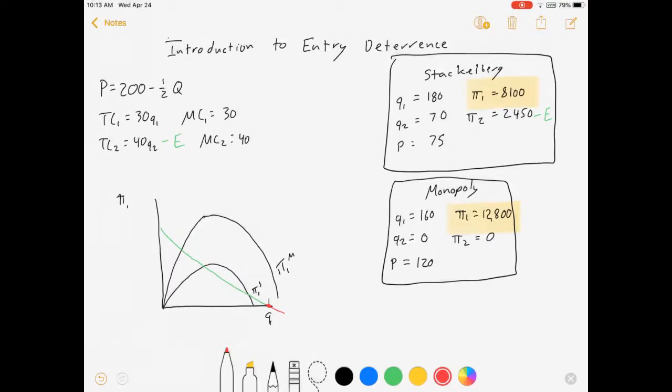This quantity is what I'm going to call Q1 deter. It's the quantity that pushes firm 2 out of the market. Firm 1's profit under deterrence is greater than firm 1's profit under Stackelberg. And so there's an incentive here for firm 1 to push firm 2 out of the market.